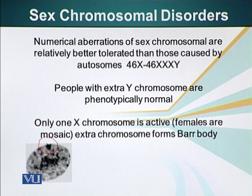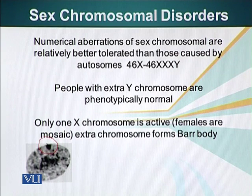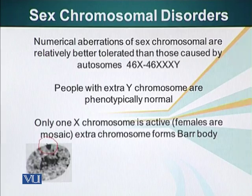In normal cells of people who have an extra X chromosome, one X chromosome is super condensed. Even normal females have one X chromosome inactivated, forming a Barr body. So if someone has more than one extra X chromosome, it will also be condensed and turned into a Barr body. We will look at an example of that in just a minute.